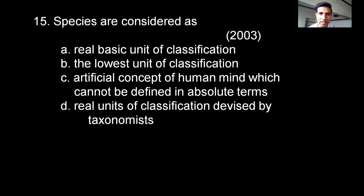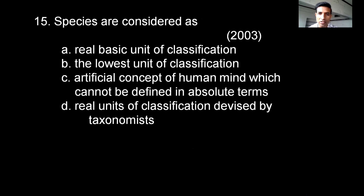Species are considered as: Option A: Real basic unit of classification. Option B: Lowest unit of classification. Option C: Artificial concept of human mind which cannot be defined in absolute terms. Option D: Real units of classification devised by taxonomists. The correct option is A — a real basic unit of classification.